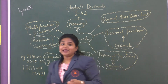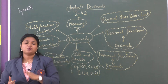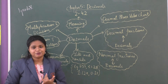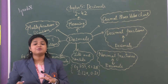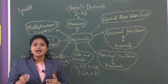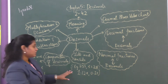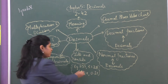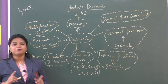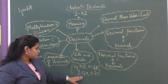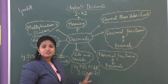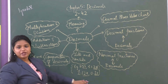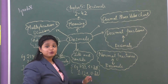Further we learned about like decimals and unlike decimals. The decimals which have the same number of decimal places are known as like decimals, and the opposite is unlike decimals. For example, 2.37 and 51.28 are like decimals because the number of decimal places is the same in both. Another example: 1.129 and 0.21 are unlike decimals because the number of decimal places is different — three in the first number and two in the second.